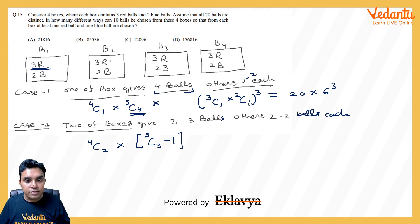So we will write 5C3 minus 1 and that will be done twice, so square. And then from other 2 boxes we will take 2 balls each. So that will again be done in 3C1 for 1 red and 2C1 for 1 blue and whole square. And this comes out to be 6 here. 5C3 is 10, 10 minus 1 is 9, square is 81 into 36 here.